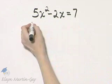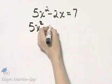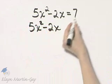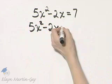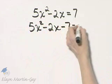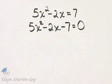That will be 5x squared minus 2x. And if I subtract 7 from both sides, that's minus 7 equals 0.